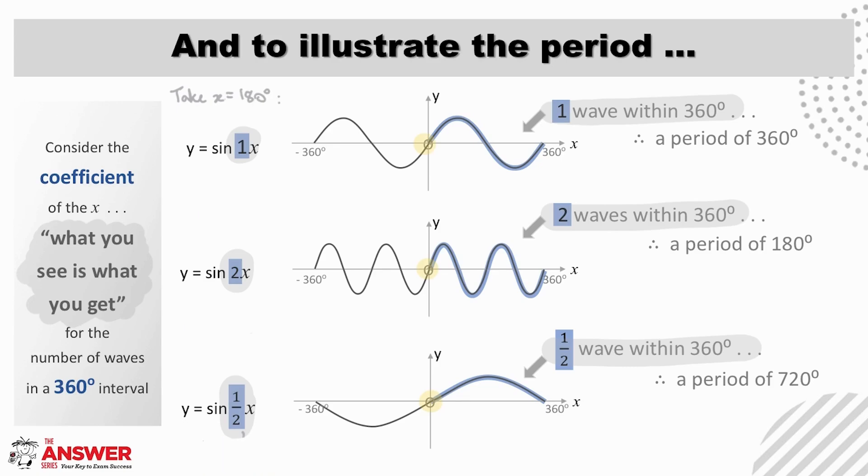Well, here, y will be sine of 180, which is zero, and for y equals sine of 2x, y will be sine of 2 times 180, which is sine of 360, which is zero, and for y equals sine of a half x, y will be sine of a half times 180, which is sine of 90, which is one.